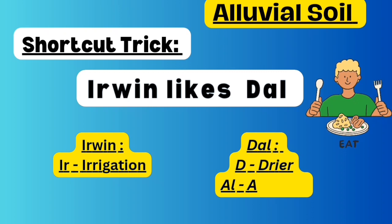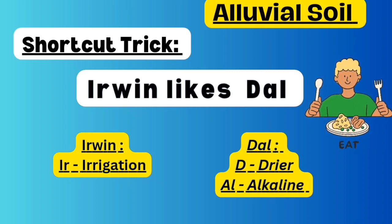Next shortcut: 'IRVIN LIKES DAL.' Take IRVIN - IR represents irrigation. Take DAL: D represents dryer region, AL represents alkaline. So irrigation is necessary for alluvial soil in the dryer region because that type of soil is alkaline. That covers all the points given under this topic.